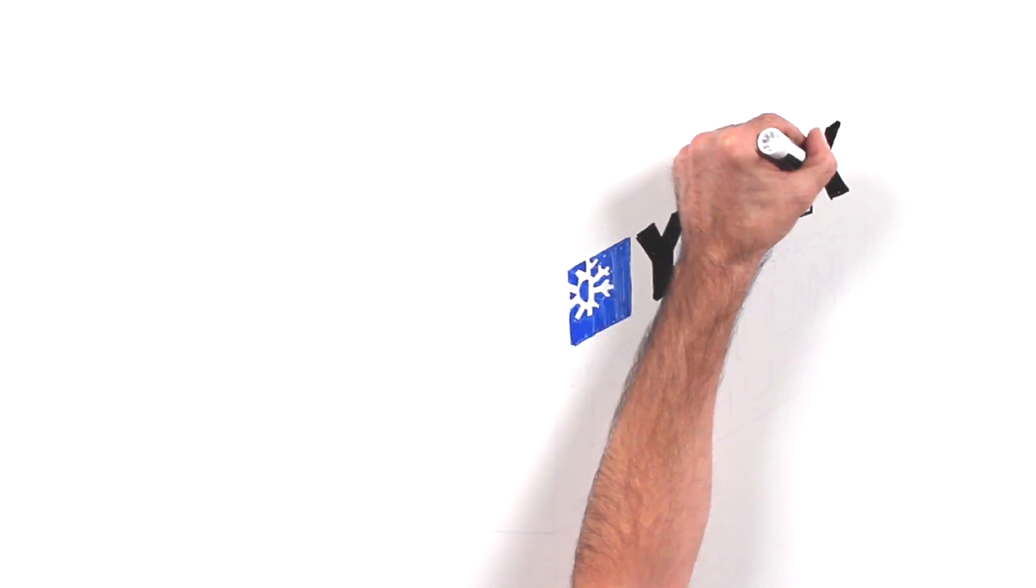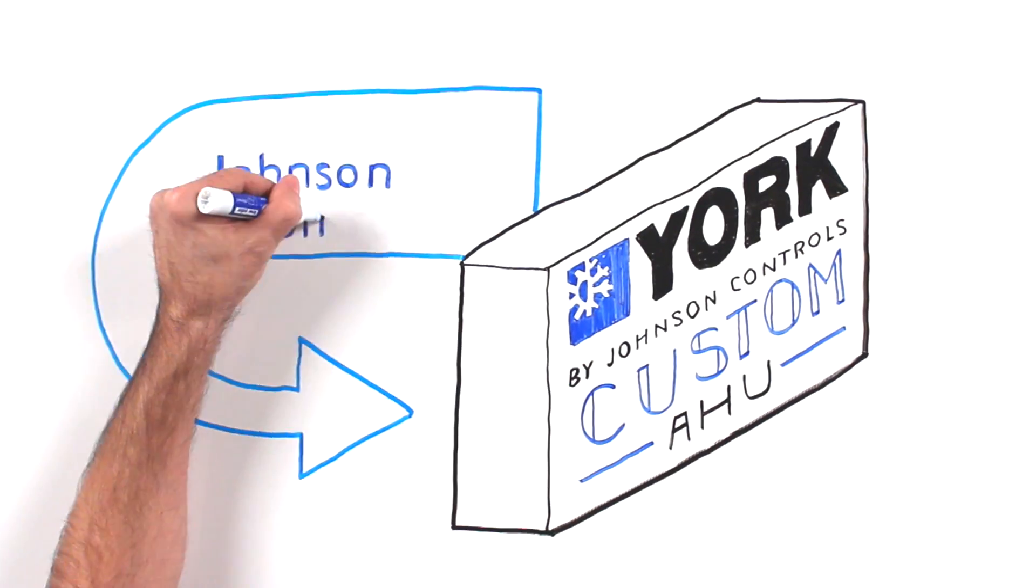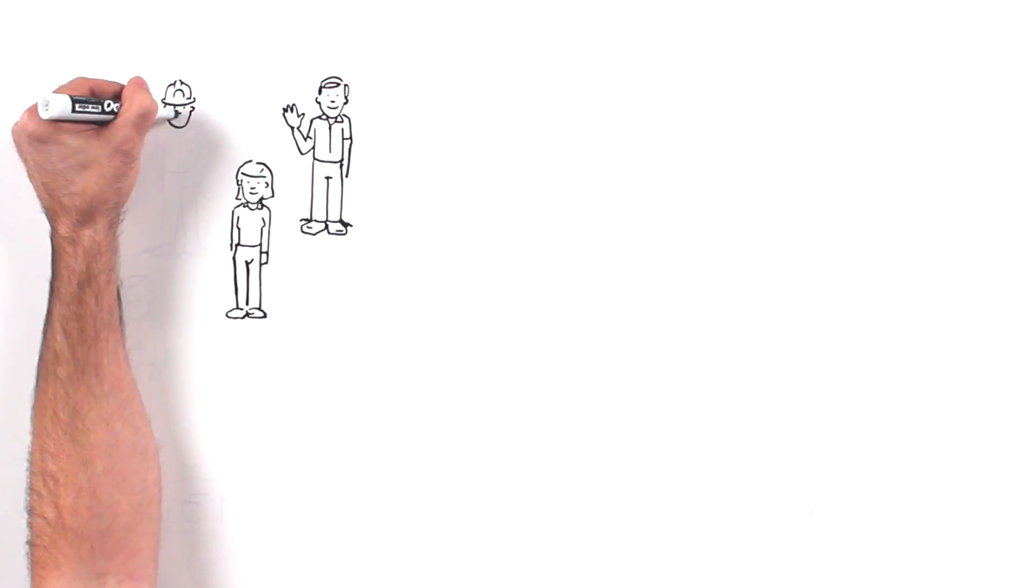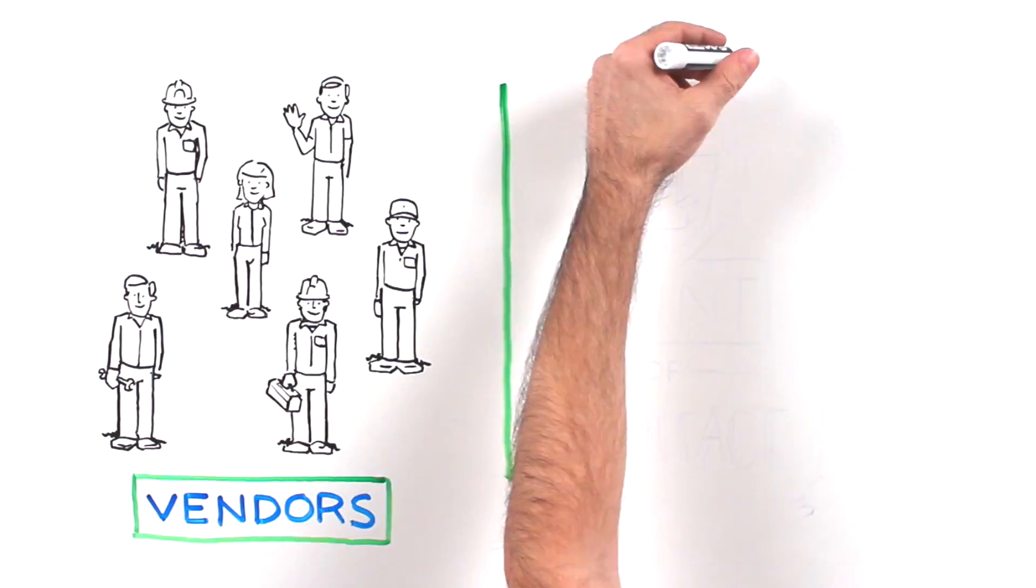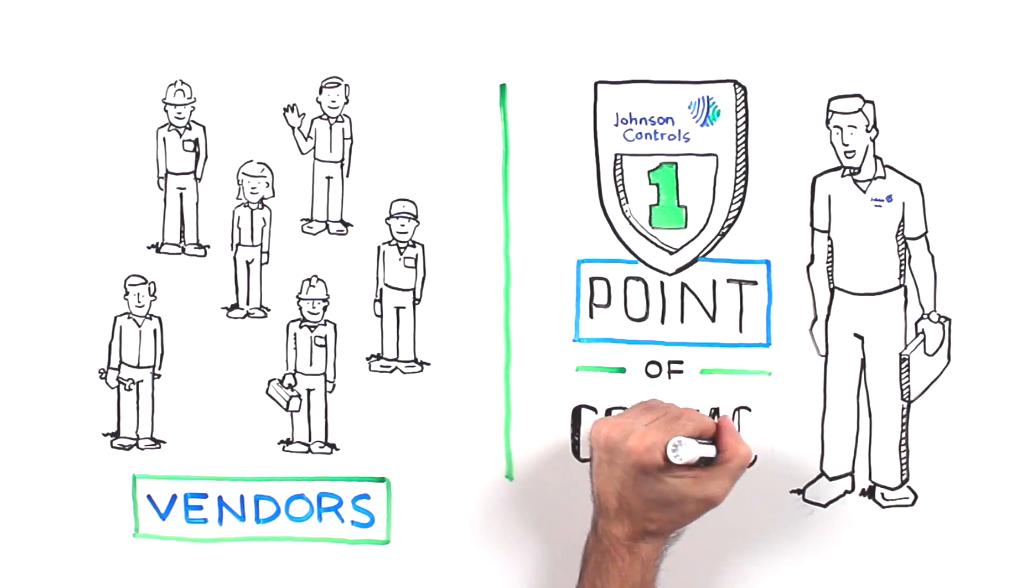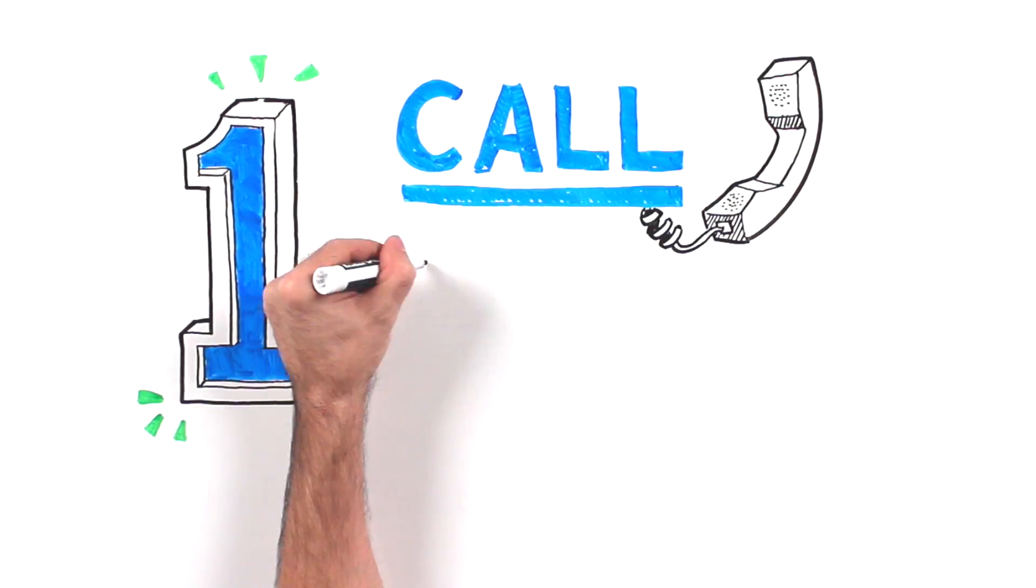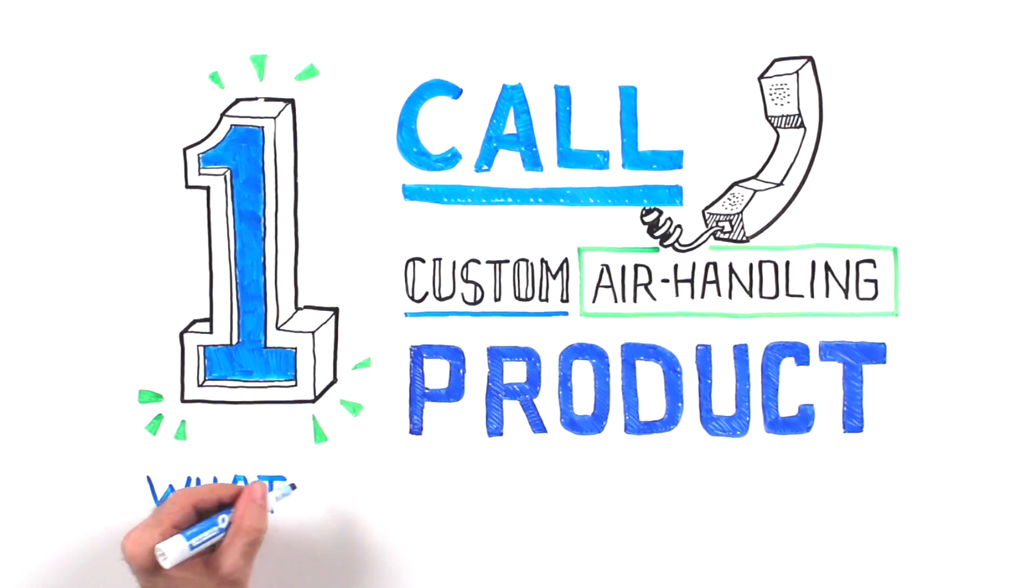And of course, every York Custom Air Handling unit is backed by Johnson Controls, which means instead of hassling with multiple vendors for service, you'll rely only on one point of contact. One call. One custom air handling product. What could be simpler?